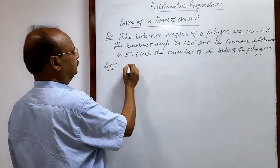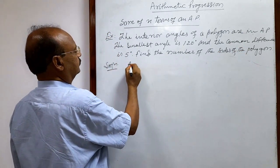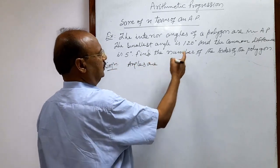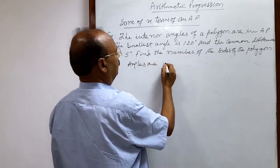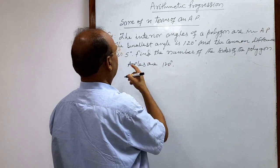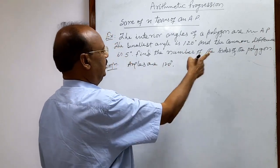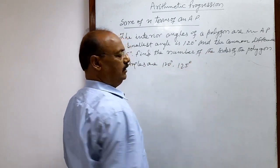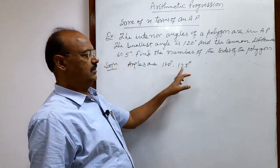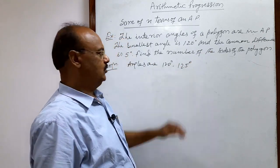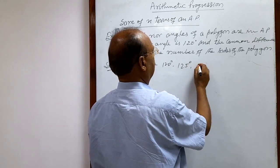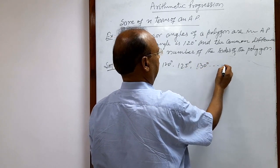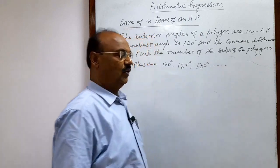The angles are starting from 120 degrees, with 5 degrees as the common difference. So the sequence is 120 degrees (this is a), 125 degrees (this is a plus d), 130 degrees (this is a plus 2d), and so on.